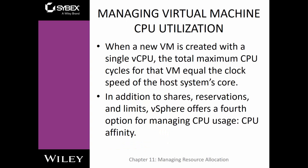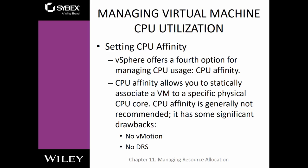When a new VM is created with a single virtual CPU, that virtual CPU is normally going to be the same speed as a core — it doesn't tie it specifically to a core, but it allows full utilization of any specific core. We have shares, reservations, and limits, but we also have an additional option called affinity. CPU affinity allows you to statically associate a VM to a specific physical CPU core. It's not normally recommended — it has lots of drawbacks: no vMotion, no DRS. But you can manually tie a VM to a specific core if you wanted to.